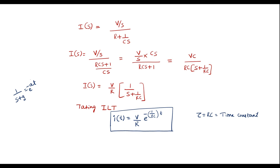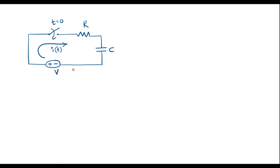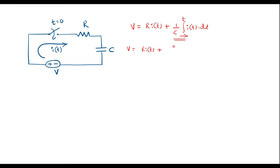Let me solve this using another method. Here at T equal to 0, the switch is closed. When the switch is closed, current I of T starts flowing in the circuit. Applying KVL: V is equal to R I of T plus voltage across capacitor, which is 1 over C times the integration of I of T DT, with integration limits from minus infinity to T.